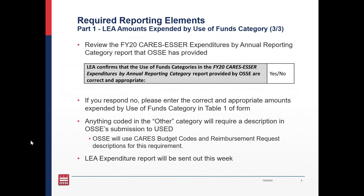A question asks: will this report go to our head of school or to us, the grant managers? It will likely go to both. I have a CARES contact list that is a combination of your contacts in your CARES application and your LEA contact list that OSSE has. So it will go to both the head of school and to grant managers. The expenditure report will be sent to LEAs later this week, and you'll get a unique one for your LEA.